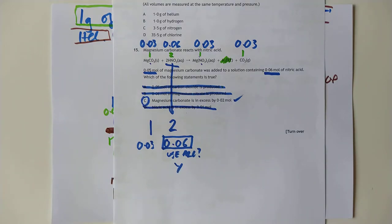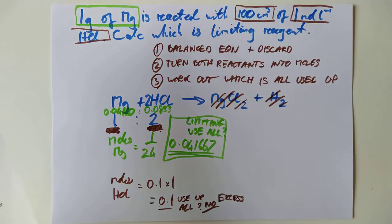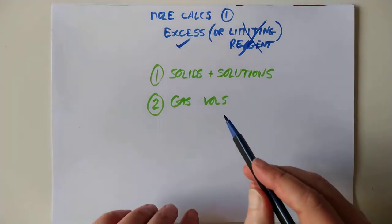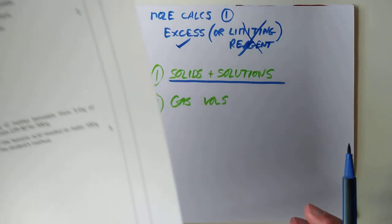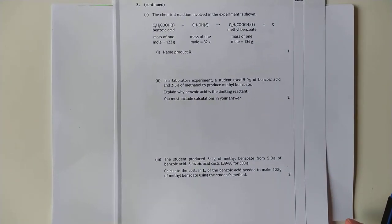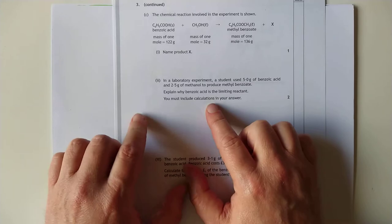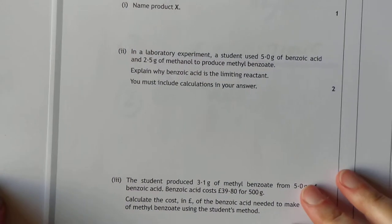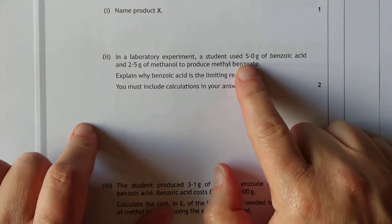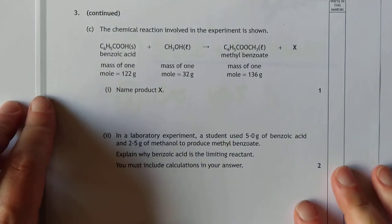I think I'll do a separate video for excess questions involving gas calculations, so we dealt with solids and solutions today. I have seen questions where it's solids and liquids — in fact I have one here I want to do with you. We'll come back to gases in a different video because they play a different set of rules. So in a lab experiment — let me zoom in — a student used five grams... here's the equation: benzoic acid reacts with another chemical.